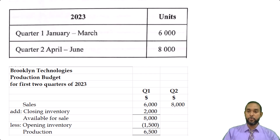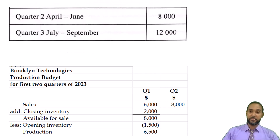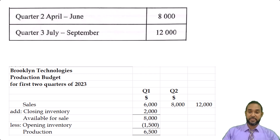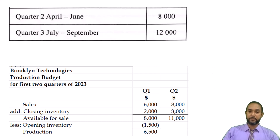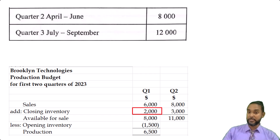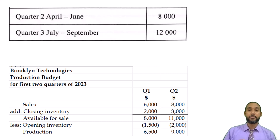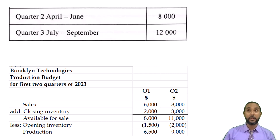In quarter two, the closing inventory is 25% of the next quarter's sales. The next quarter's sales is 12,000, 25% of which is 3,000. Now, 8,000 plus 3,000 is 11,000. And the opening stock for quarter two is quarter one's closing stock, which was 2,000. And 11,000 minus 2,000 is 9,000. So if you need to check out how to do production budgets or any type of budgets for CSEC POA, be sure to check that link I put in the description.